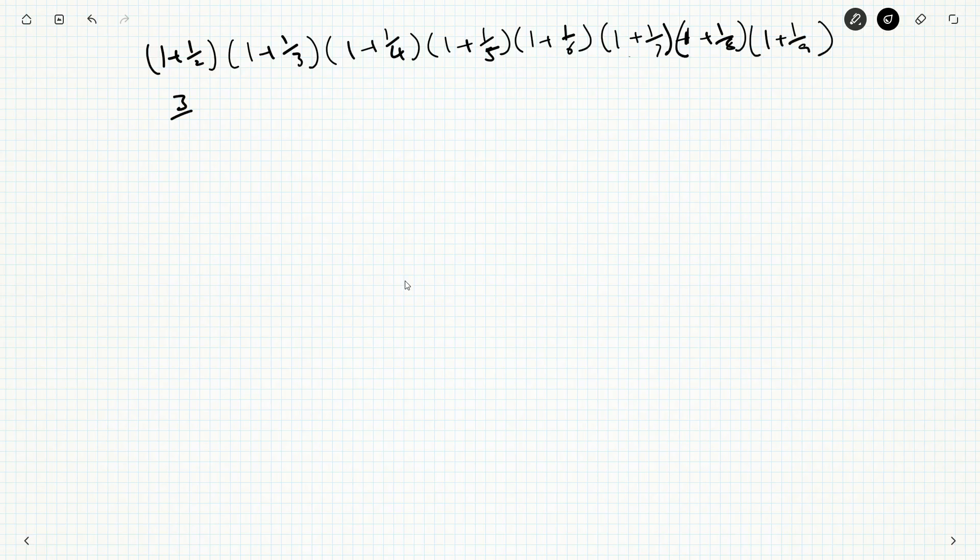What's 1 plus a half? Why, it's 2 over 2 plus 1 over 2, it's going to be 3 halves. This is going to be 4 thirds, and this is going to be 5 fourths, 6 fifths, 7 sixths, 8 sevenths, 9 eighths, and 10 ninths.